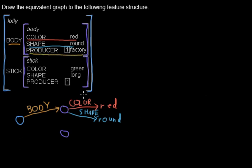Here I draw another property, producer, and it points to factory. Now this upper complex type is done. The lower part is left.